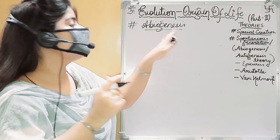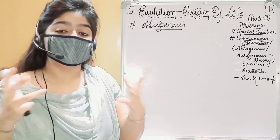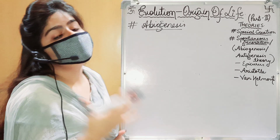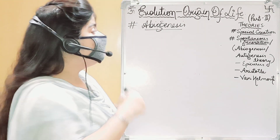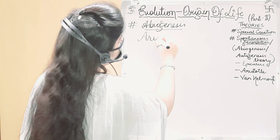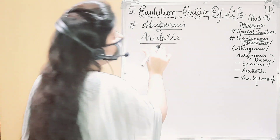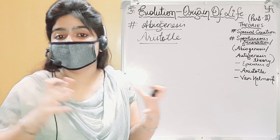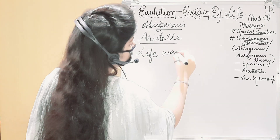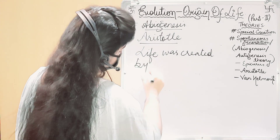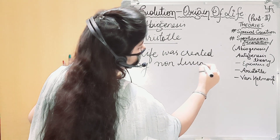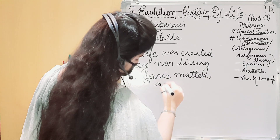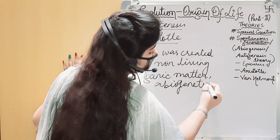Abiogenesis means the process of making something without the intervention or interference of human beings. This theory was first given by Aristotle — remember this name. Aristotle mentioned that life was derived or created from some non-living organic matter, abiogenetically.